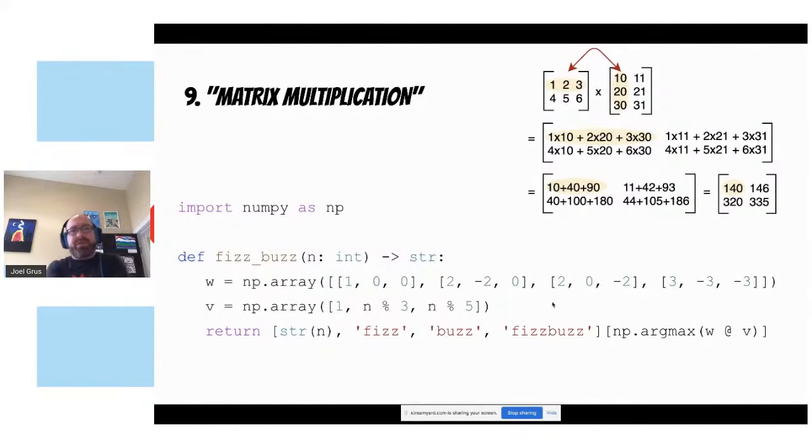The ninth solution is the matrix multiplication solution. Matrix multiplication is pretty popular these days, so I wanted to get a solution in that involves matrix multiplications. Here, we're using NumPy because NumPy is the way to do matrix multiplication. I just have a weights matrix that I multiply by some feature matrix and take the argmax and that gives me FizzBuzz. I'm not sure if this one's surprising or not. I like this one, too. I think it's kind of neat and clean.